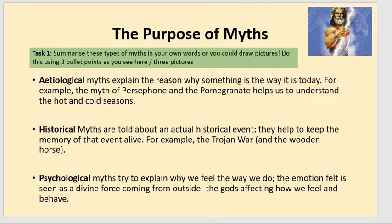The first might be something called an etiological myth, which explains the reasons why something is the way it is today. For example, we have the myth of Persephone and the pomegranate, which helps us to understand the hot and cold seasons of the year. We also have historical myths, told about an actual event that happened, helping keep the event alive and in our memory — for example, the Trojan War with the wooden horse. Then we have psychological myths, which try to explain why we feel the way that we do. They're to do with emotions and seen as a divine force that comes from the gods, affecting how we feel and behave.